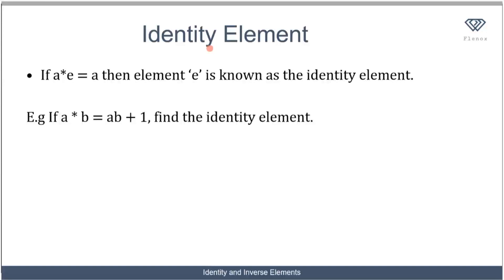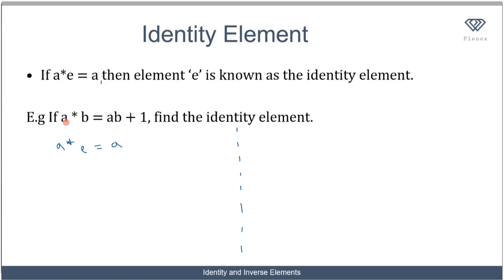So what is an identity element? If a★e equals a, then element e is known as the identity element. Now this might sound complicated, but I'm going to use an example to illustrate that. So if a★b equals ab plus one, find the identity element. The first thing you want to do is write the condition or formula for the identity element — you need to learn it: a★e must equal a, and e is the identity element.